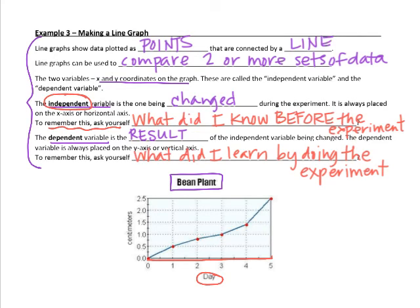The dependent variable is the result of the independent. So because time passed, the bean plant grew. So this side right here, the number of centimeters the bean plant grew, is the result of time passing. So we have time, which is independent. It's going to happen no matter what. And the growth over here is our dependent variable.